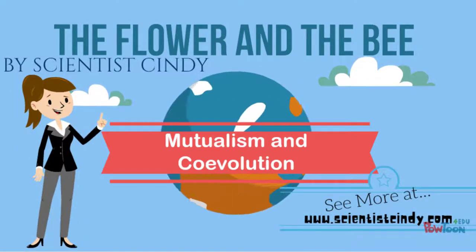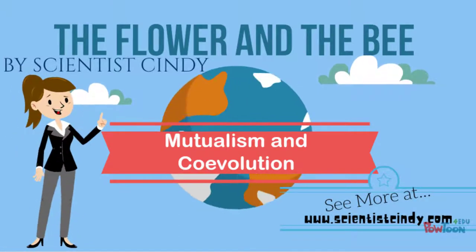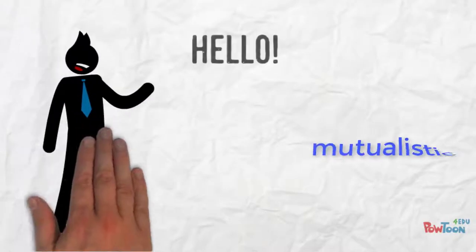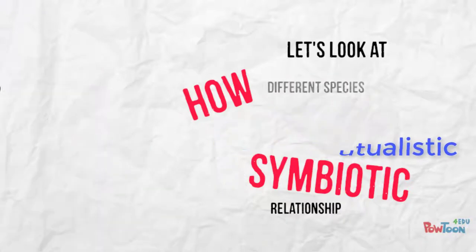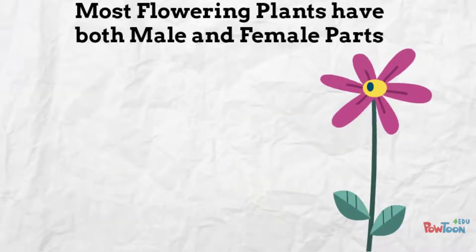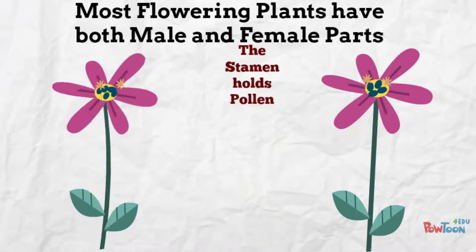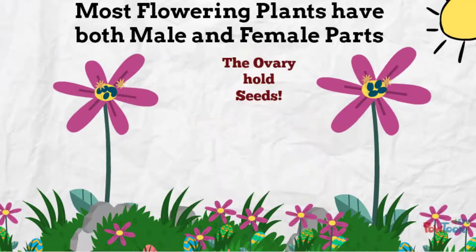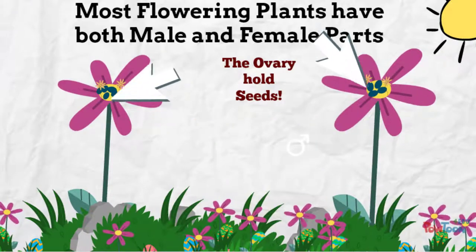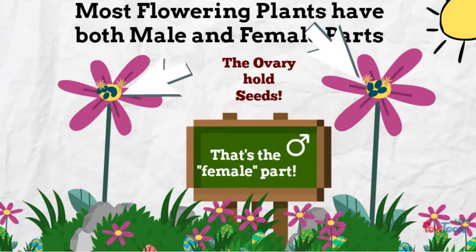The flower and the bee: let's look at mutualism and co-evolution. We will look at how different species have co-evolved to have a mutualistic symbiotic relationship. Most flowering plants have both male and female parts. The stamen holds the pollen, that is the male part. The ovary holds the seeds, that is the female part.